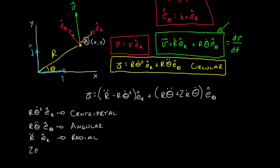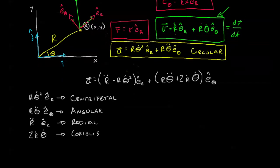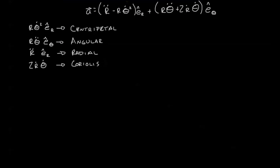Finally, 2 r dot theta dot is some funky kind of combination that happens when you have an angular velocity as well as a radial velocity. Let's shift down and rewrite these so we can get a better intuition for what each of these terms does.